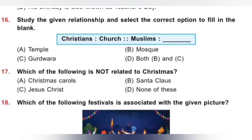Question 17: Which of the following is not related to Christmas? Options: A. Christmas carols, B. Santa Claus, C. Jesus Christ, D. None of these. Christmas is related to Christmas carols, Santa Claus and Jesus Christ — all of them are related to Christmas. Since the question asks what is not related to Christmas, the answer is D, None of these.